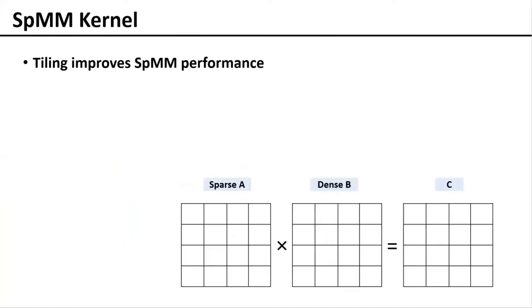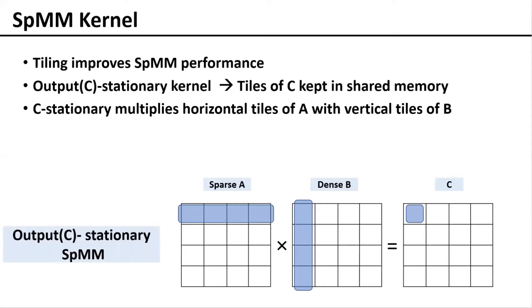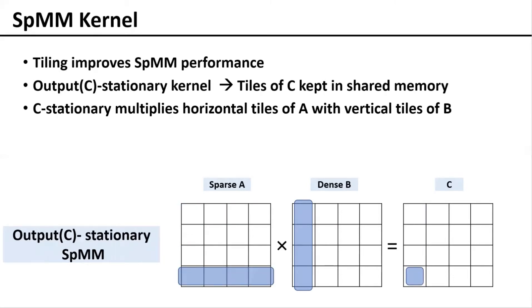The next component is the computational kernel. SPMM is the operation of multiplying a sparse matrix with a dense matrix. One common approach to improve SPMM's performance is tiling. C-stationary is a simple, common kernel where tiles of C are kept in shared memory. Horizontal tiles of A are multiplied with the same vertical strip from B to generate tiles of C. This approach is common as it increases data locality on the dense matrix B, which has a larger memory footprint compared to A.